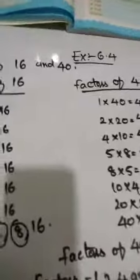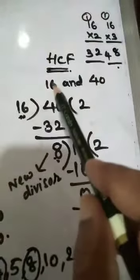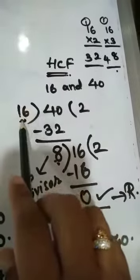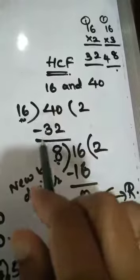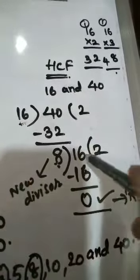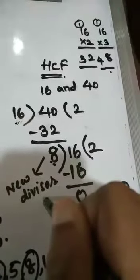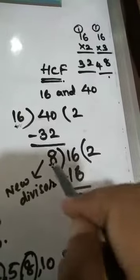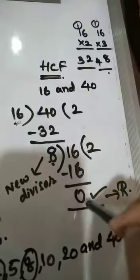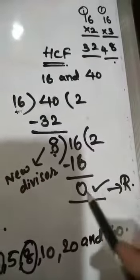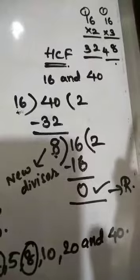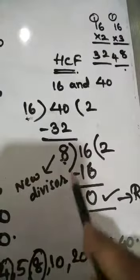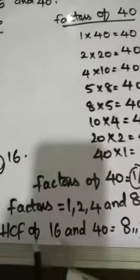After finding the common factors, we have to find the HCF. HCF of 16 and 40: 40 divided by 16 — 16 twos are 32; 40 minus 32 equals 8. The divisor becomes the new dividend and 8 becomes the new divisor. So 16 divided by 8 — 8 twos are 16; 16 minus 16 equals 0. We got remainder 0, so we stop. The new divisor is the HCF. HCF of 16 and 40 equals to 8.